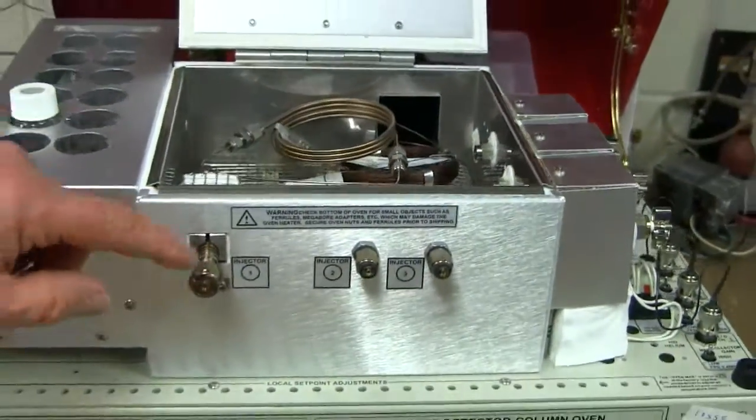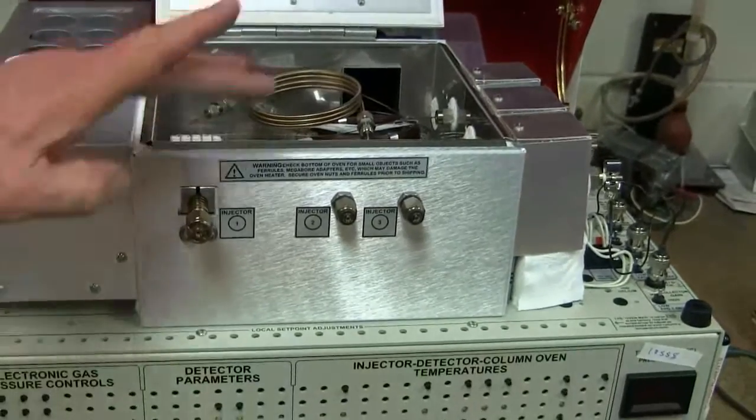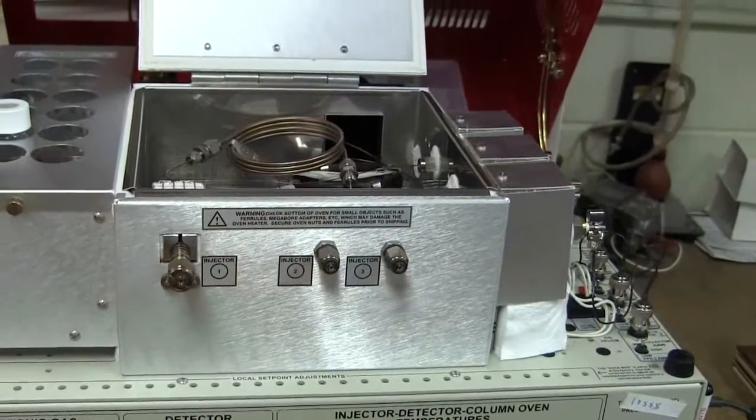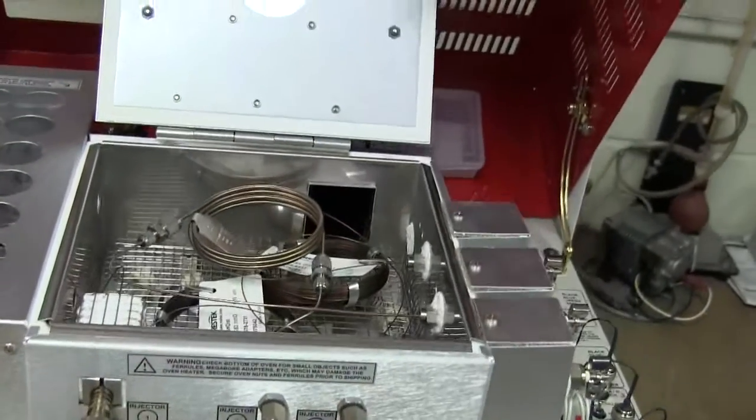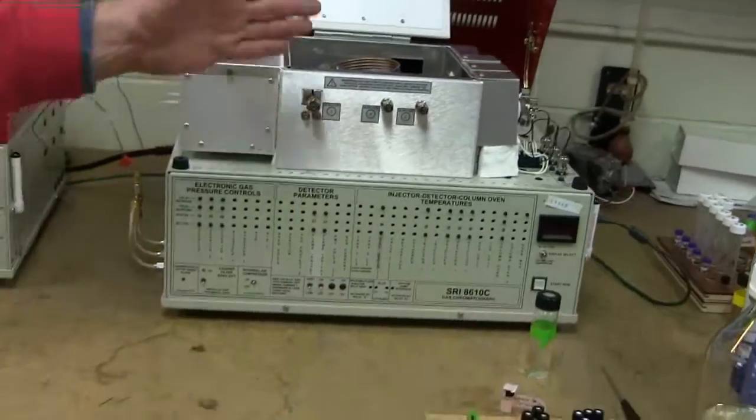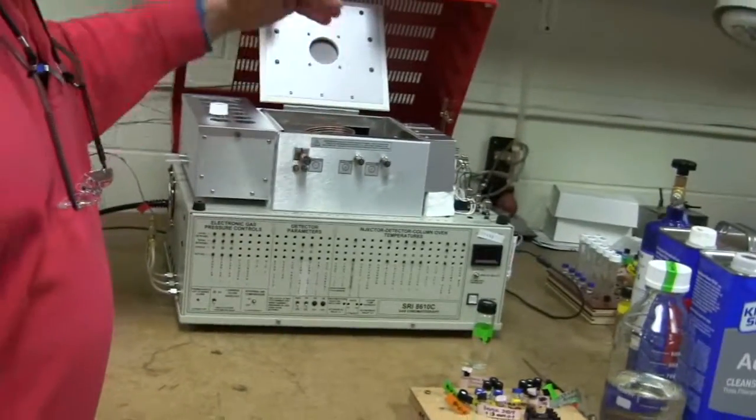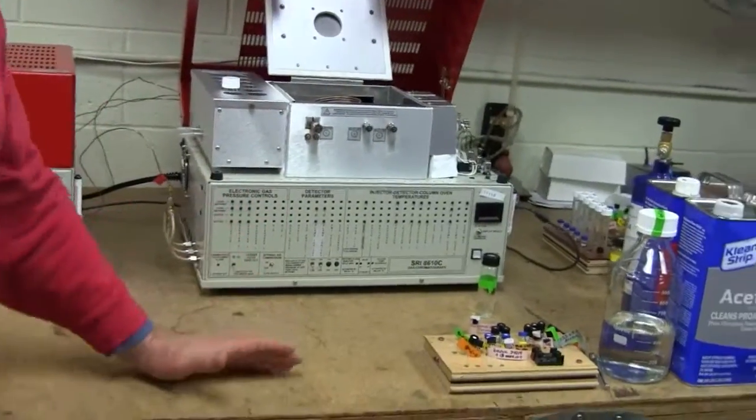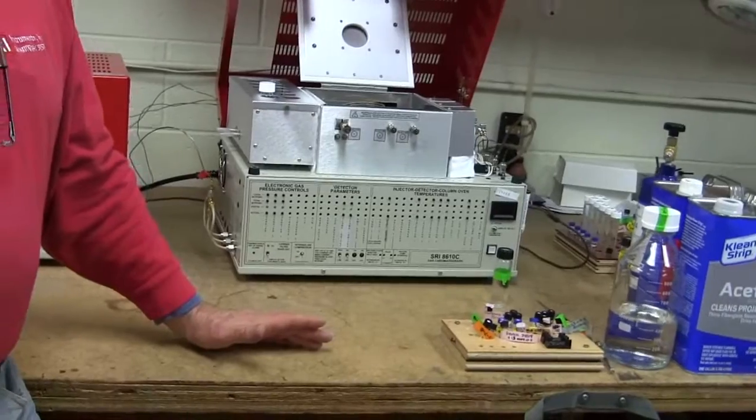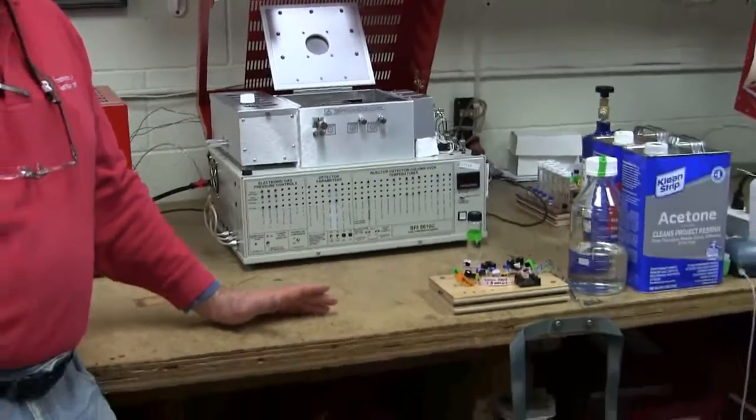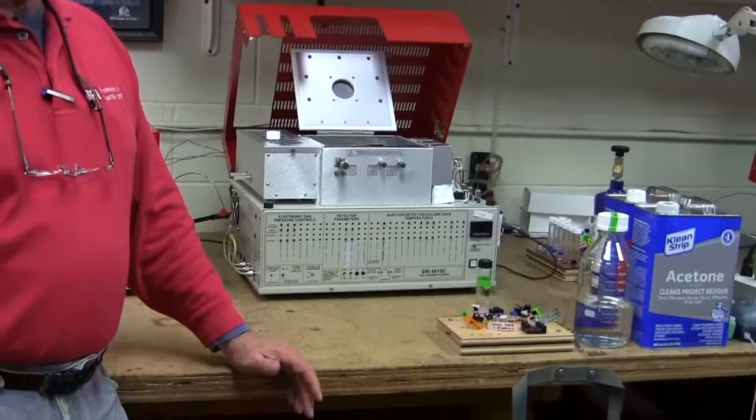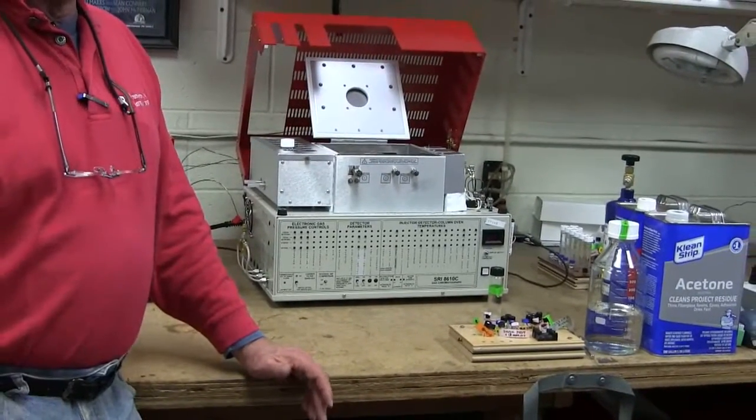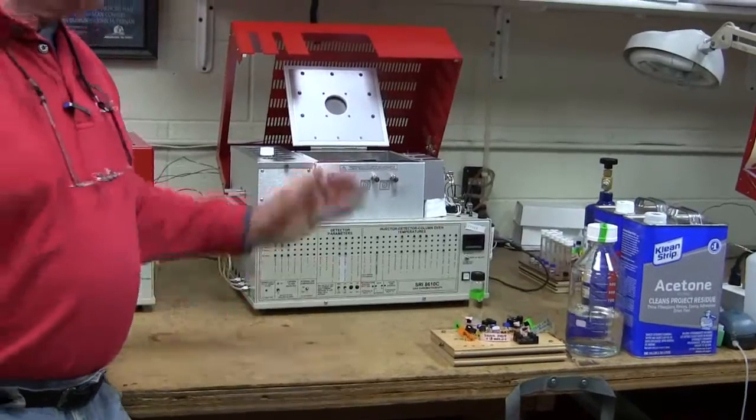There's one place to inject the sample for cannabinoids, a second place for residual solvents, and a third place for measuring terpenes. This obviously adds to the cost. This GC with the three different simultaneous analyses runs around $22,000, so it adds money, but it reduces the possibility of annoying troubleshooting situations when something goes wrong when you change the tube.